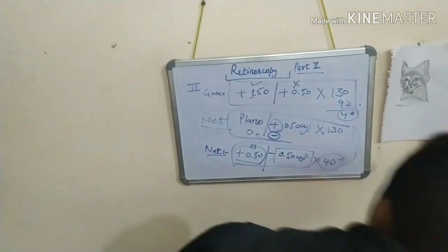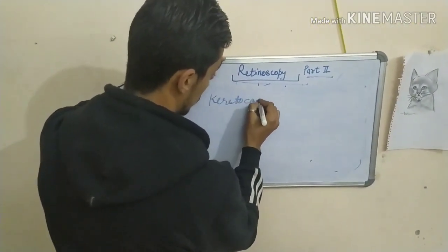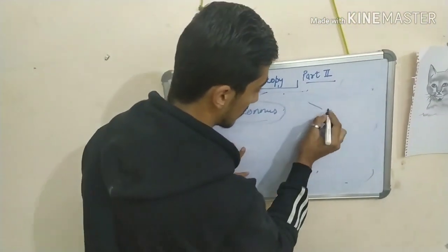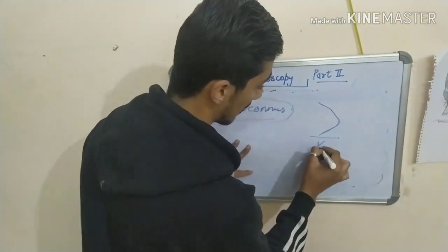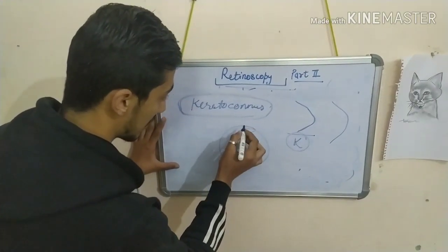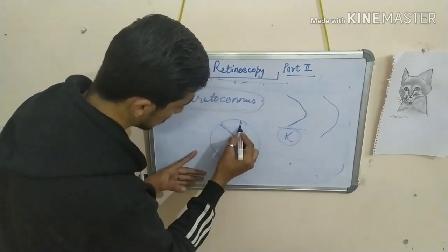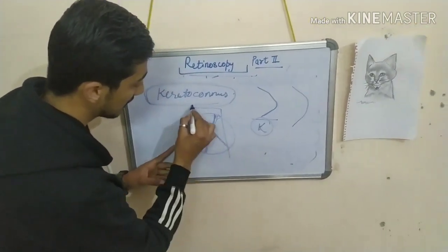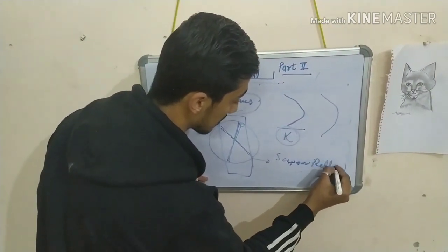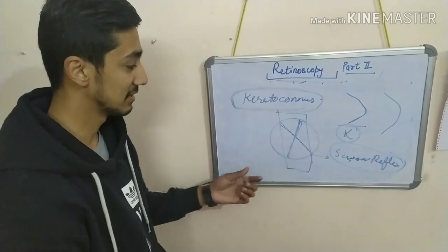Now we have a few more things. For example, if you see a keratoconus patient — keratoconus is a condition where the cornea is bulged out or becomes cone-shaped. This is the keratoconus cornea compared to the normal cornea. When you put the slit on the keratoconus patient's eye, you find a reflex like this — you put the slit here and you see this type of reflex. This is known as the scissor reflex. This is the main sign of the keratoconus patient.